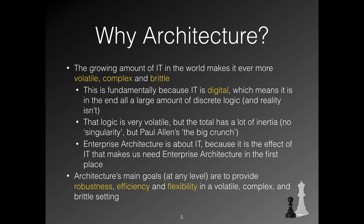Therefore, the main goals for architecture for me are a fight against the results of that volatility, brittleness, and complexity. So architecture is about robustness, efficiency, and flexibility. Next to the obvious bugs in systems, robustness mostly means security and continuity. Efficiency means the cost of using all that logic and data, and flexibility is about the problems we face when we try to make changes in all that logic.